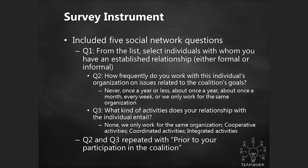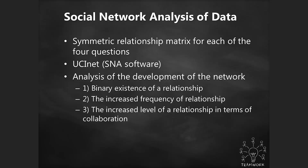That means it's a long survey — if they know 10 people, for each of those 10 people they're going to be asked more questions, so it gets exponentially longer. For those people they know at any level above zero, we say: how frequently do you work with this individual on these goals? If the goal was prenatal health, you could say 'I never work with them,' 'about once a month,' 'every week,' or 'we only work for the same organization.' We also asked what kind of activities does your relationship entail — this is how we measure level of collaboration: cooperative, coordinated, or integrated. This was repeated for prior to participation in the coalition, to capture if they were working together before — otherwise it's not the effect of the coalition.